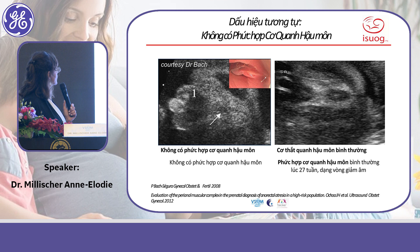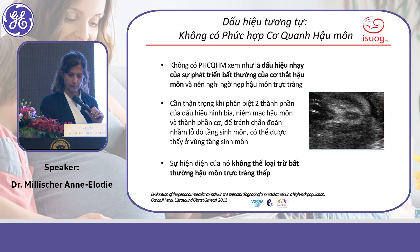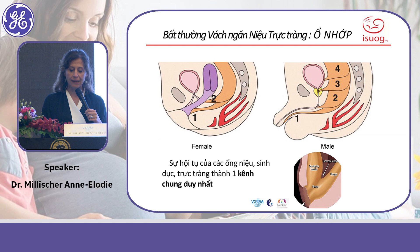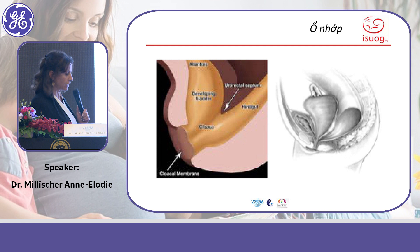Here is an example of absence of the perianal muscular complex — you no longer see the hypoechoic ring surrounding the hyperechoic central area. This case has no anal sphincter muscle. In front of this anomaly you can suspect anorectal malformation, and the worst form is the cloaca.